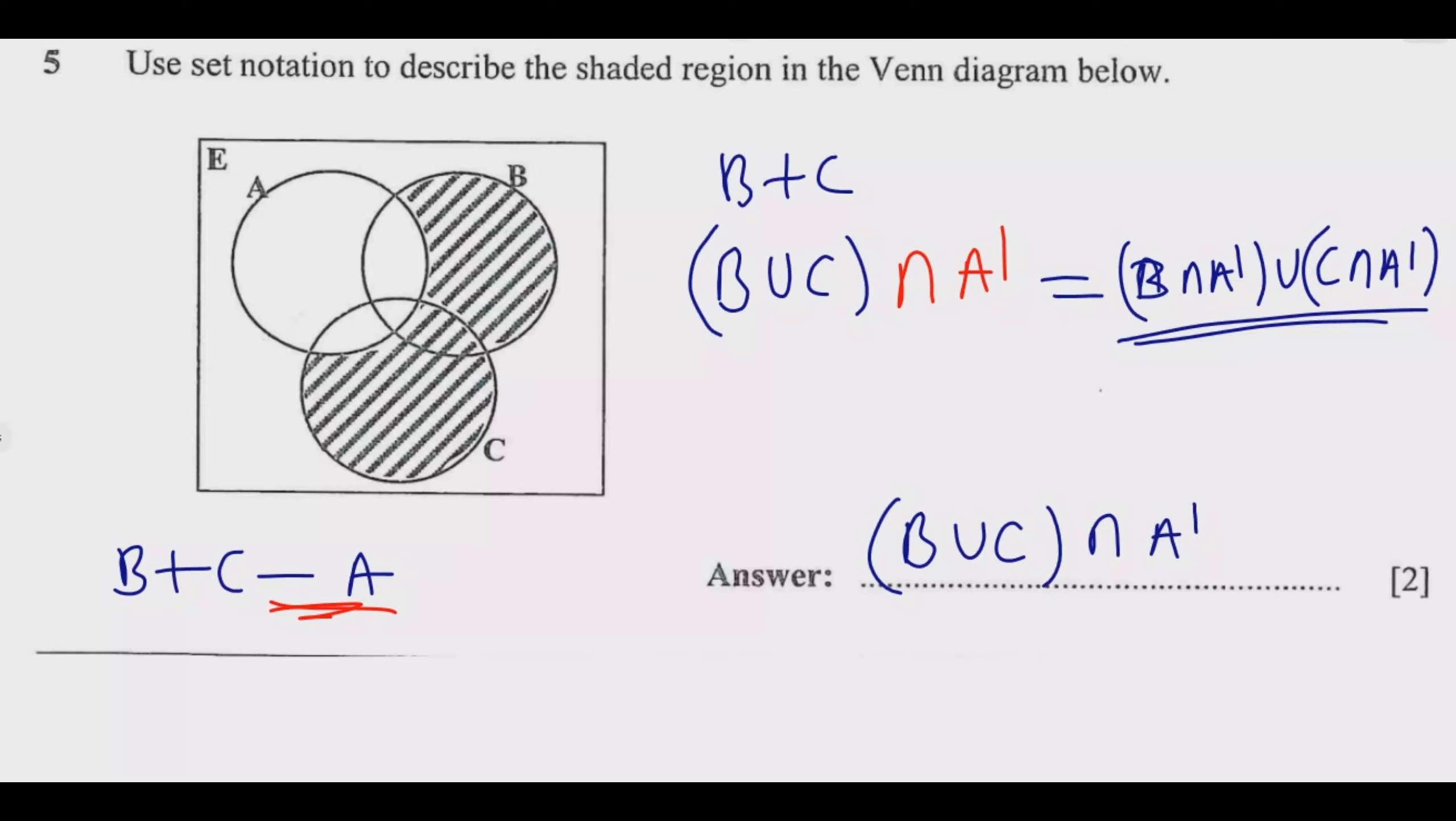What is in B, now we remove what is in A, then you combine again what is in C minus what is in A. That's what this means. But the second one is a neater way, so this is how you answer this question to get the two marks.